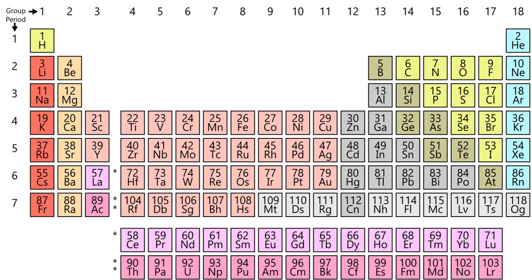These peculiarities of period 7 may be due to a variety of factors, including a large degree of spin-orbit coupling and relativistic effects, ultimately caused by the very high positive electrical charge from their massive atomic nuclei.